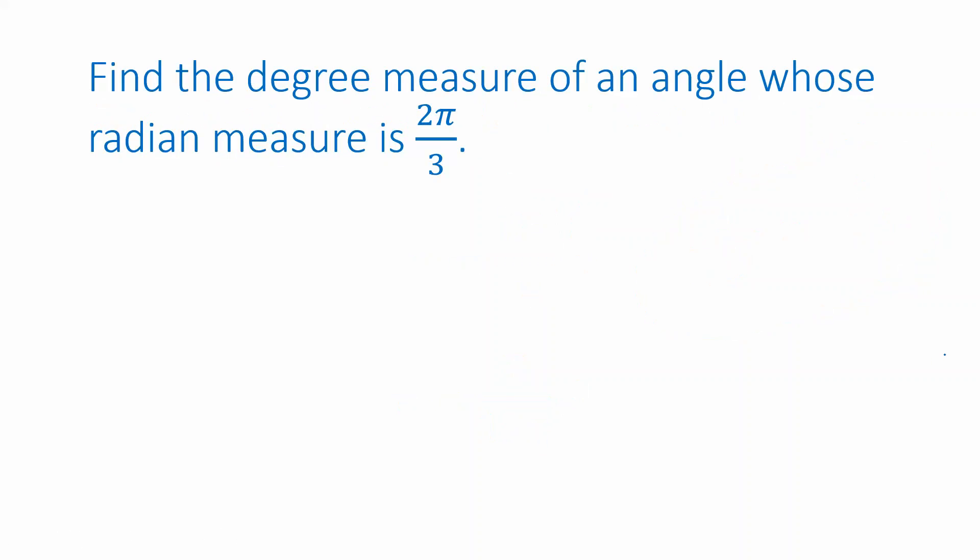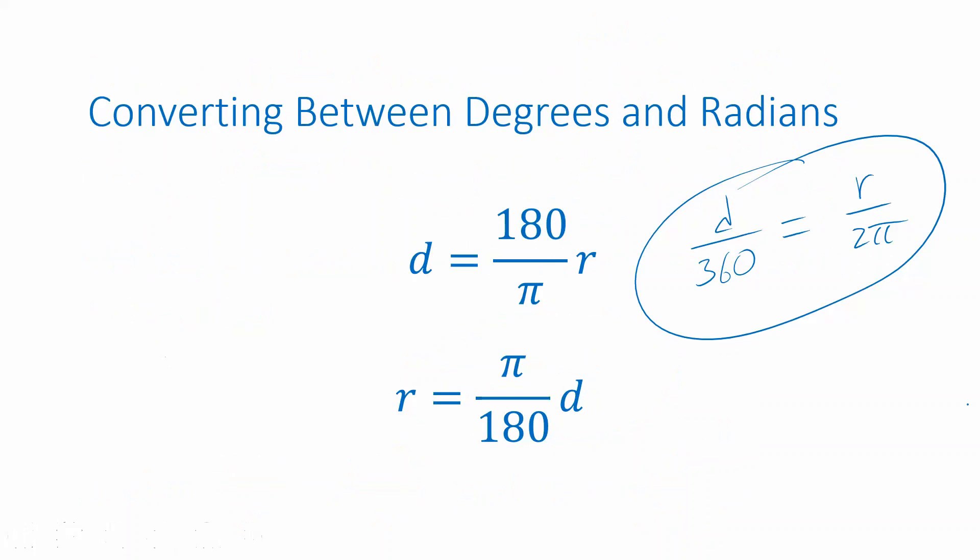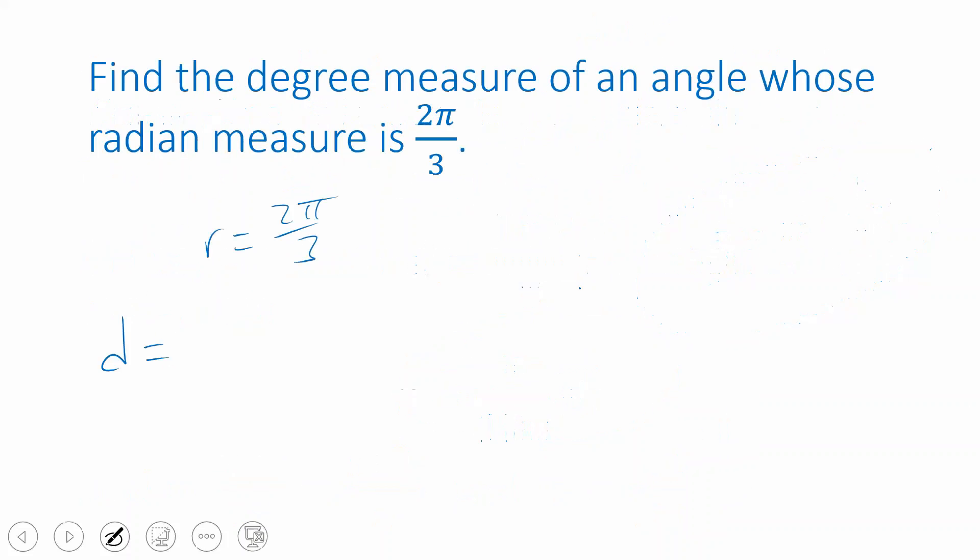I'll do one of them using one of the formulas. So here I have a radian measure r is 2π over 3, and I want to find the degree measure. And from the previous slide, d is 180 over π times r. Now instead of r, I'm going to plug in the known measurement, 2π over 3 radians. And then what I want to do is simplify this.